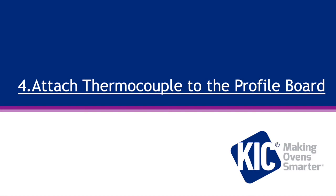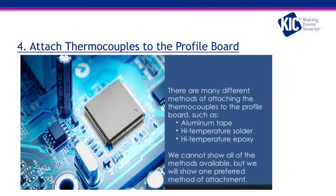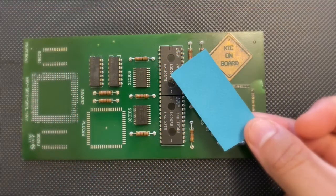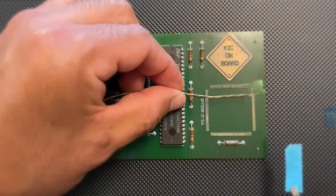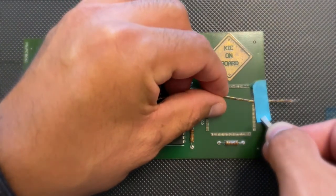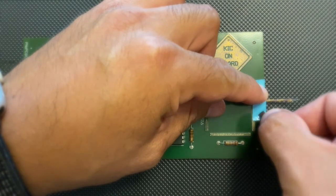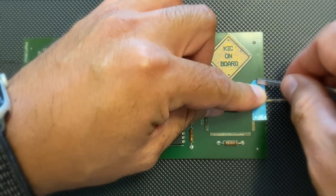Attach thermocouples to the profile board. There are many different methods of attaching thermocouples, such as aluminum tape, high temperature solder, and high temperature epoxy. KIC recommends the use of aluminum tape for a quick and less invasive method. Don't forget to attach the air TC as shown in this video — it should be placed approximately one inch off the leading edge of the board.